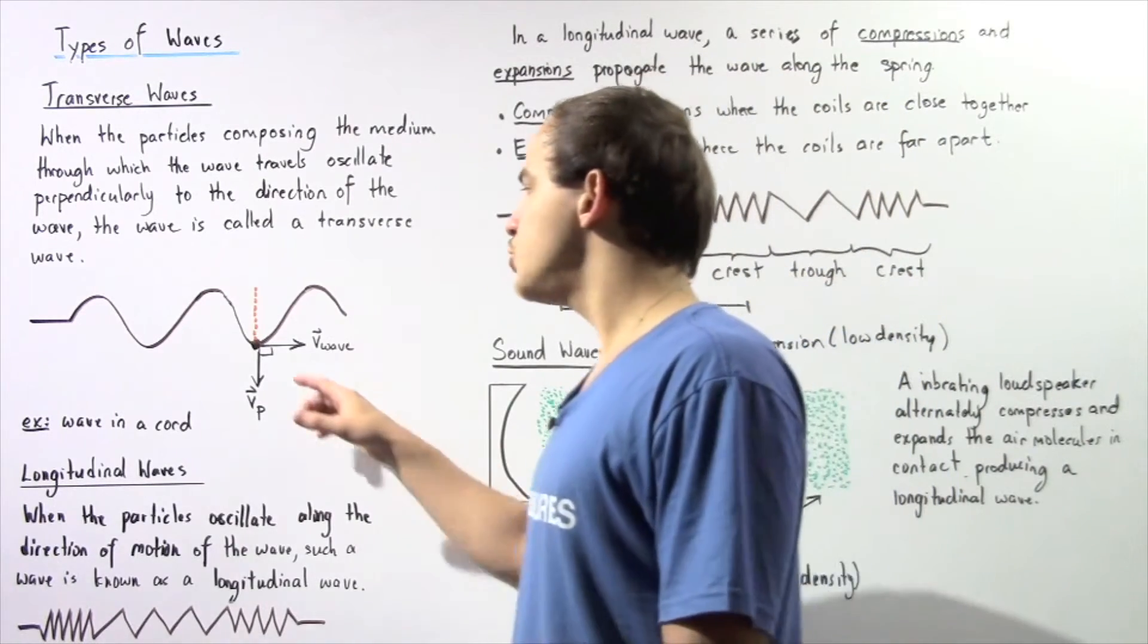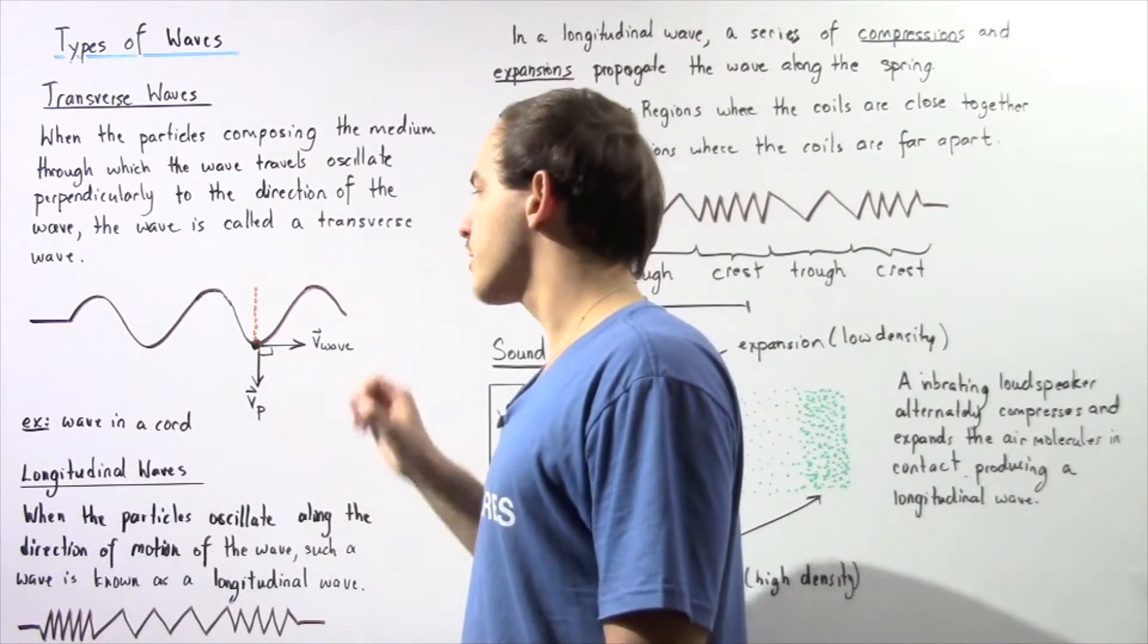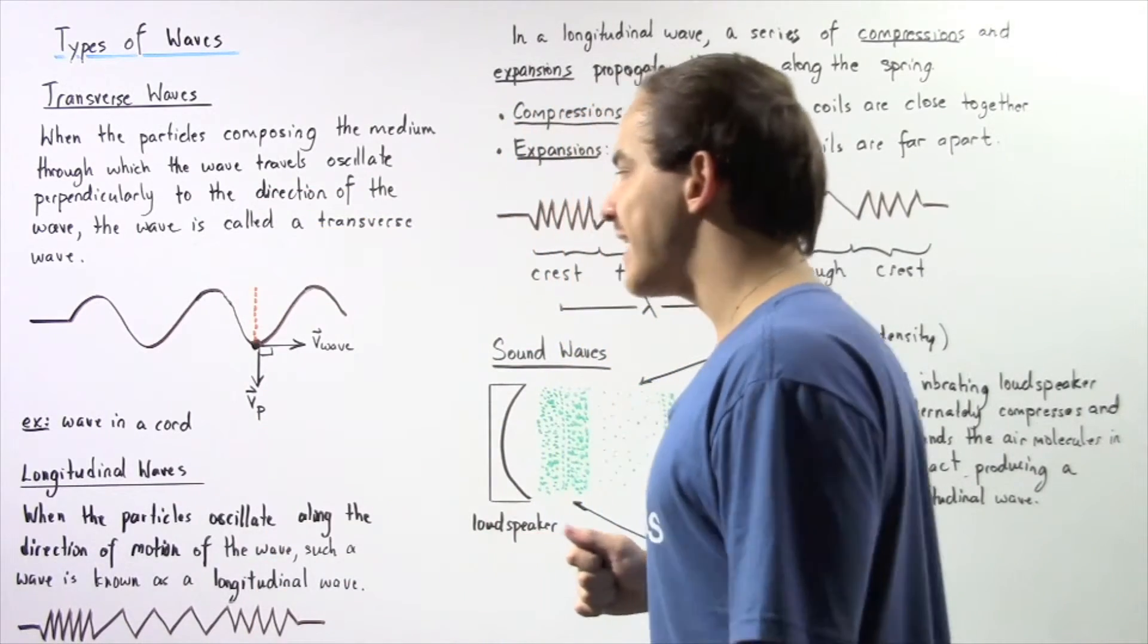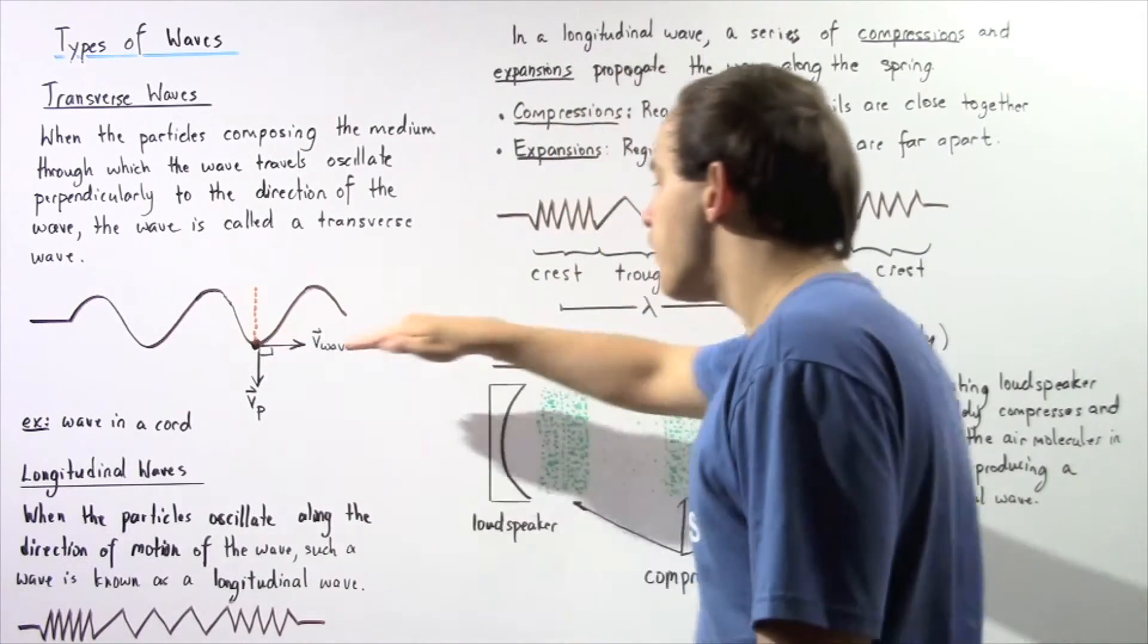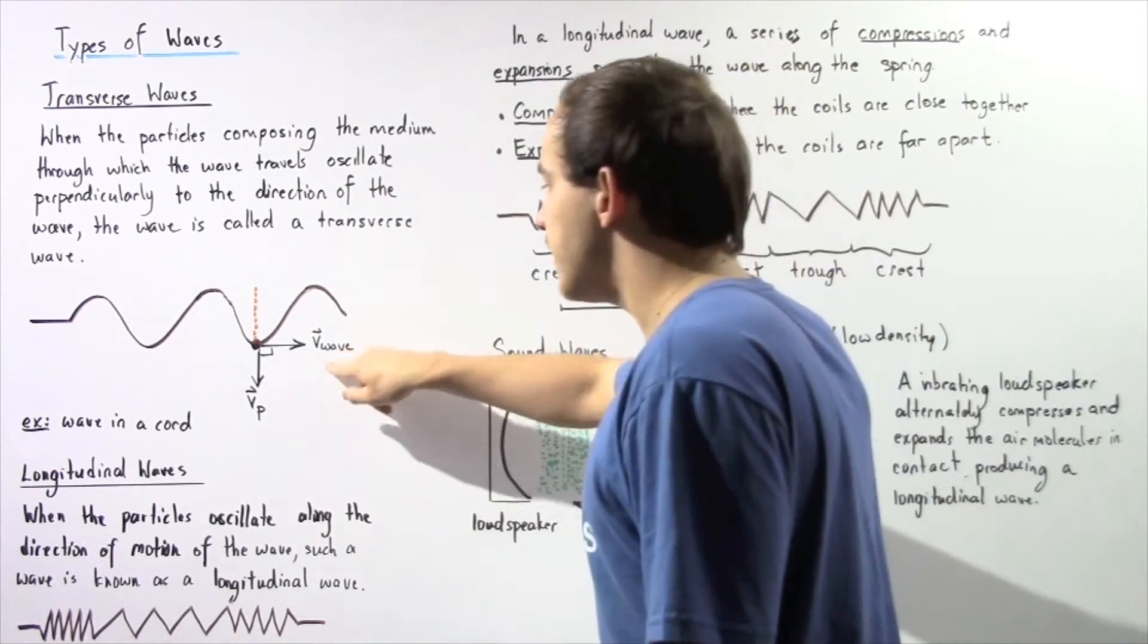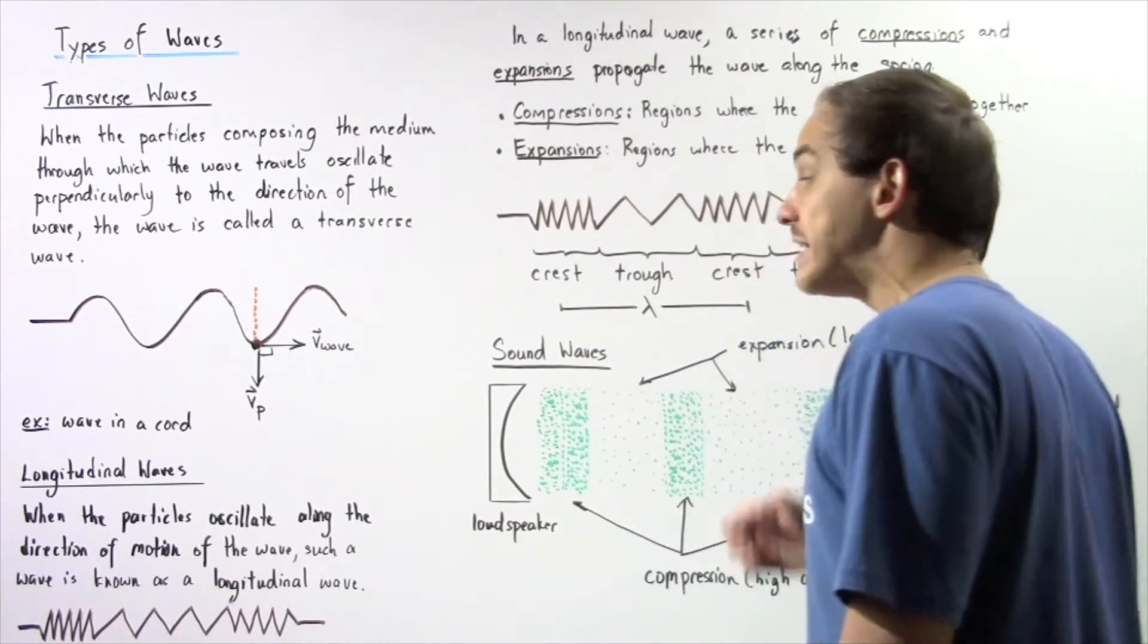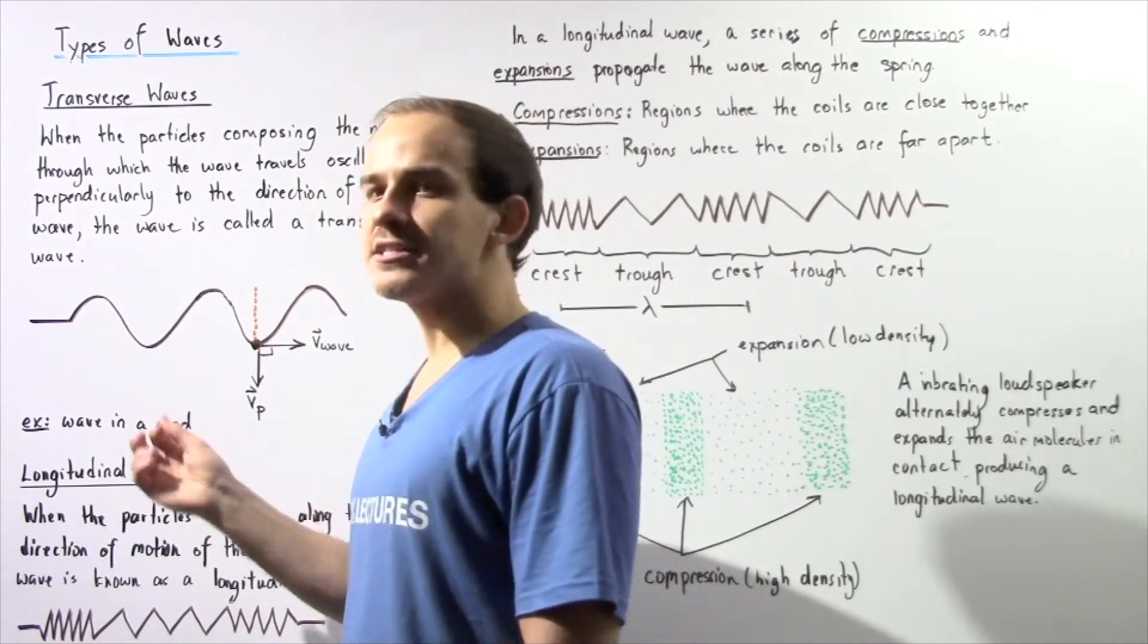So let's suppose we choose this region right before we reach the trough. The velocity of our particle at this region points downward along the y-axis. And the velocity of the wave points in the positive direction along the x-axis. Notice that these two velocities are transverse, they're perpendicular to one another, and therefore this is one example of a transverse wave.